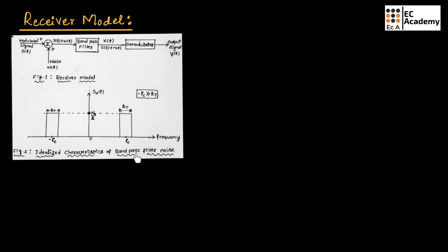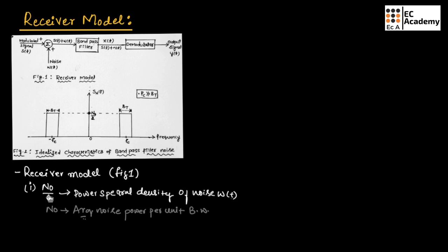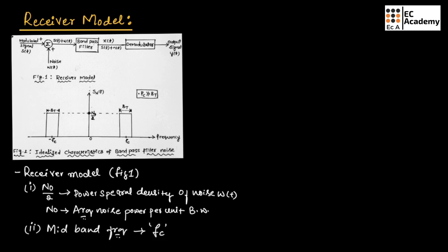The ideal characteristics of the band pass filter are shown in figure 2, where n0/2 represents the power spectral density of the noise. For the receiver model shown in figure 1, we can define the following parameters. First, we denote n0/2 as the power spectral density of noise W(t), where n0 represents average noise power per unit bandwidth. The mid-band frequency is taken as Fc, which is the carrier frequency.